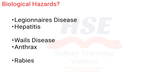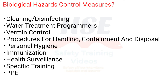Biological hazards covered include Legionnaire's Disease, Hepatitis, Weil's Disease, Anthrax, and Rabies. Control measures include Cleaning, Disinfecting, Water Treatment Programmes, Vermin Control, Procedures for Handling, Containment and Disposal, Personal Hygiene, Immunization, Health Surveillance, Specific Training, and PPE.